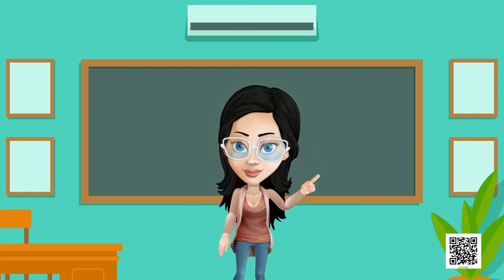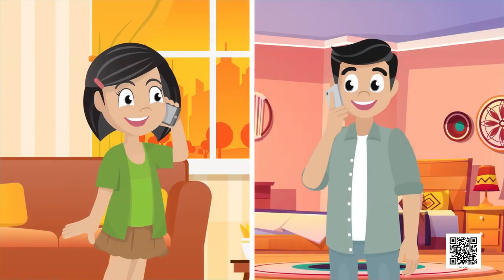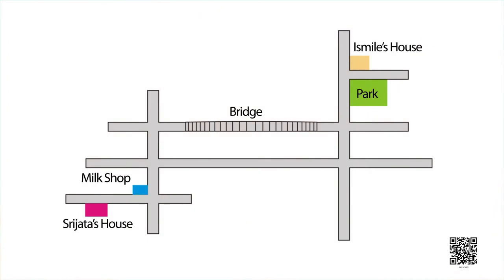Now here is a picture of Smile's home. Smile is talking to his friend Srijata on telephone and has explained the way to his house. He told Srijata: go to the milk shop from your house, then turn right, then from the second square cross the bridge, go straight and then turn right. After moving about 100 meters you will see a big park, and after crossing the park you will see a small street — the first house in that street is my house.